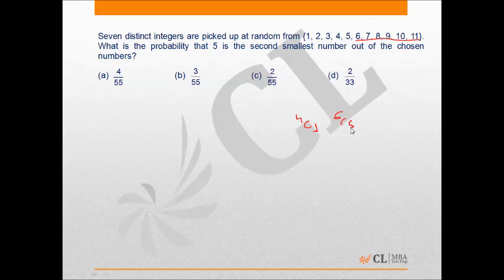Therefore, the total number of favorable ways in which the given task can be accomplished is 4C1 times 6C5. This equals 4 times 6, which is 24.